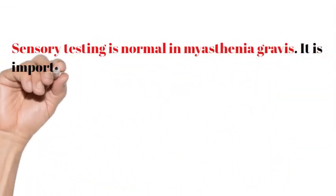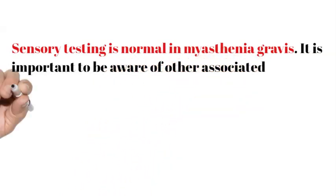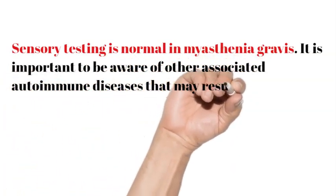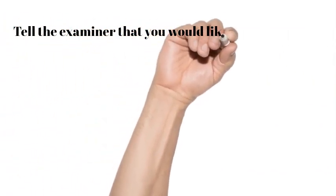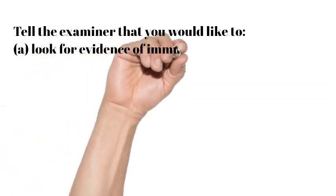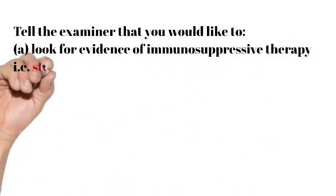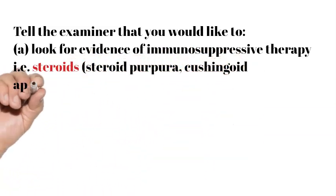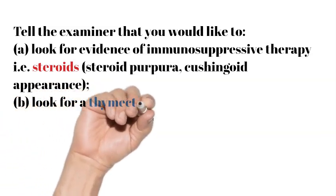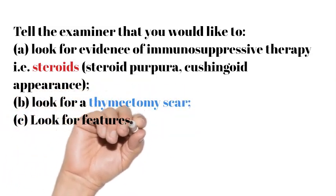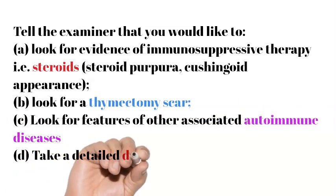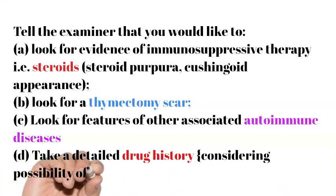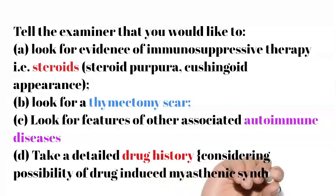Sensory testing is normal in myasthenia gravis. It is important to be aware of other associated autoimmune diseases that may result in a neuropathy. Tell the examiner that you would like to look for evidence of immunosuppressive therapy — that is steroids, steroid purpura, Cushingoid appearance. Look for a thymectomy scar. Look for features of other associated autoimmune diseases: hyperthyroidism, tachycardia, tremor, goiter, features of Graves disease — the most common association. Take a detailed drug history considering the possibility of drug-induced myasthenic syndrome.